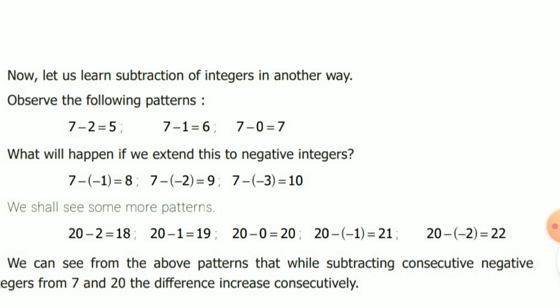Now observe the following patterns: 7 minus 2 equals 5; 7 minus 1 equals 6; 7 minus 0 equals 7; 7 minus (minus 1) equals 8; 7 minus (minus 2) equals 9; 7 minus (minus 3) equals 10. Similarly: 20 minus 2 equals 18; 20 minus 1 equals 19; 20 minus 0 equals 20; 20 minus (minus 1) equals 21; 20 minus (minus 2) equals 22.